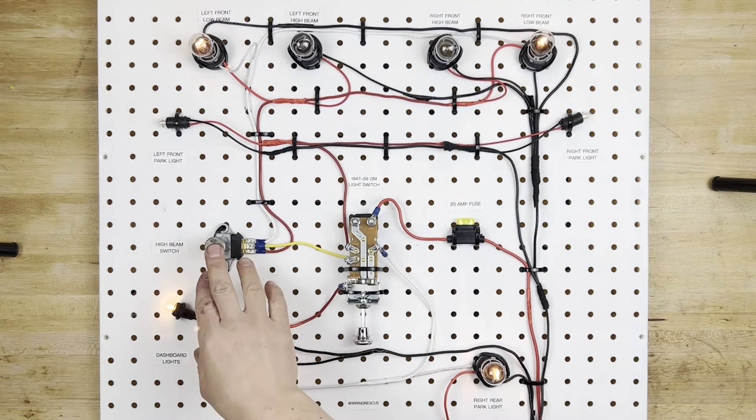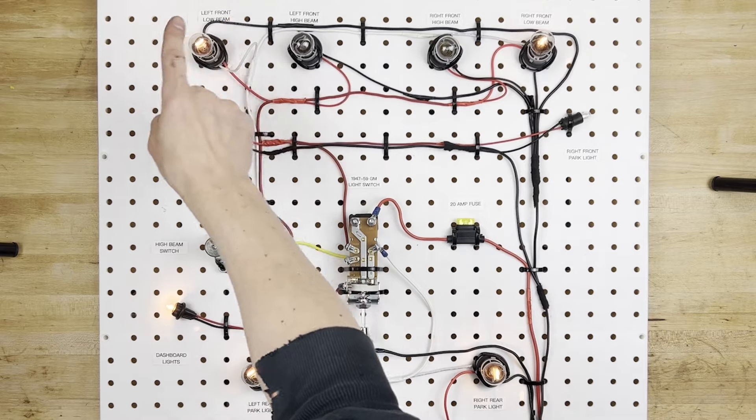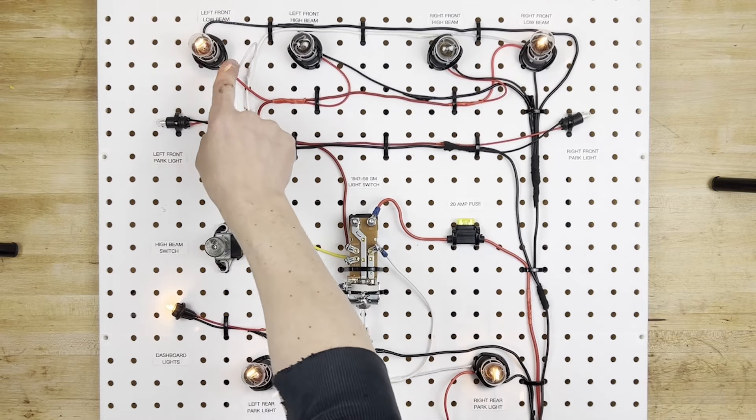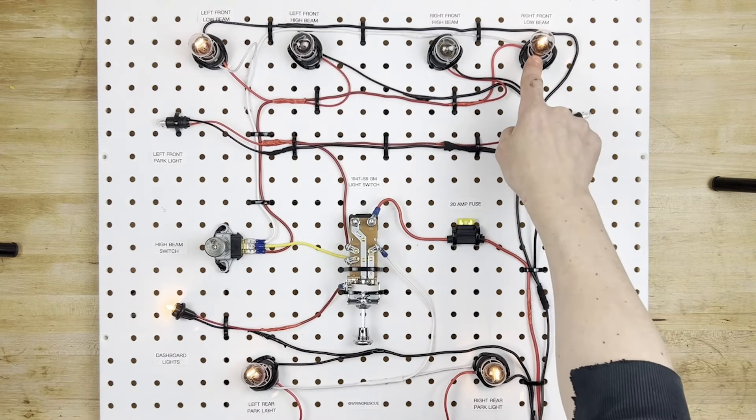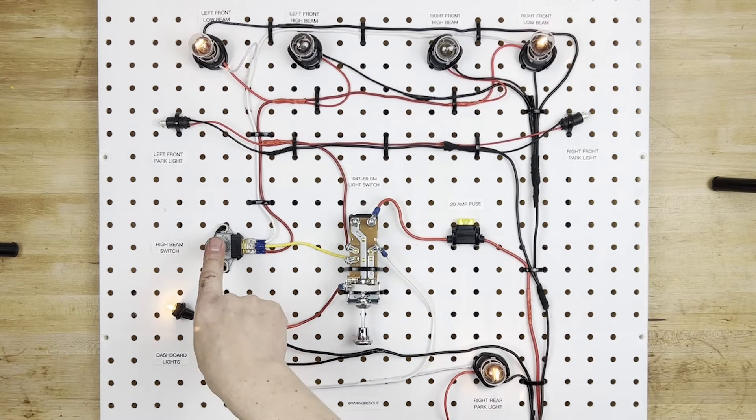Now the white wire will get power when we turn on the low beams. So right now the dimmer switch or high beam switch is set to low beams. And you can see they're sending power out the white wire, which connects to this low beam bulb, and it jumps all the way over and goes to this low beam bulb.